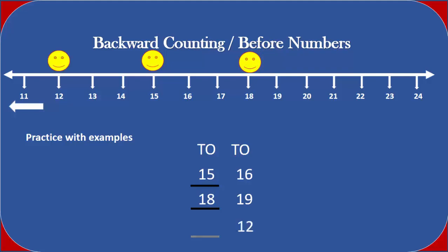Number twelve — there is a blank space before number twelve. That means we have to go backwards. So the number before twelve is eleven.